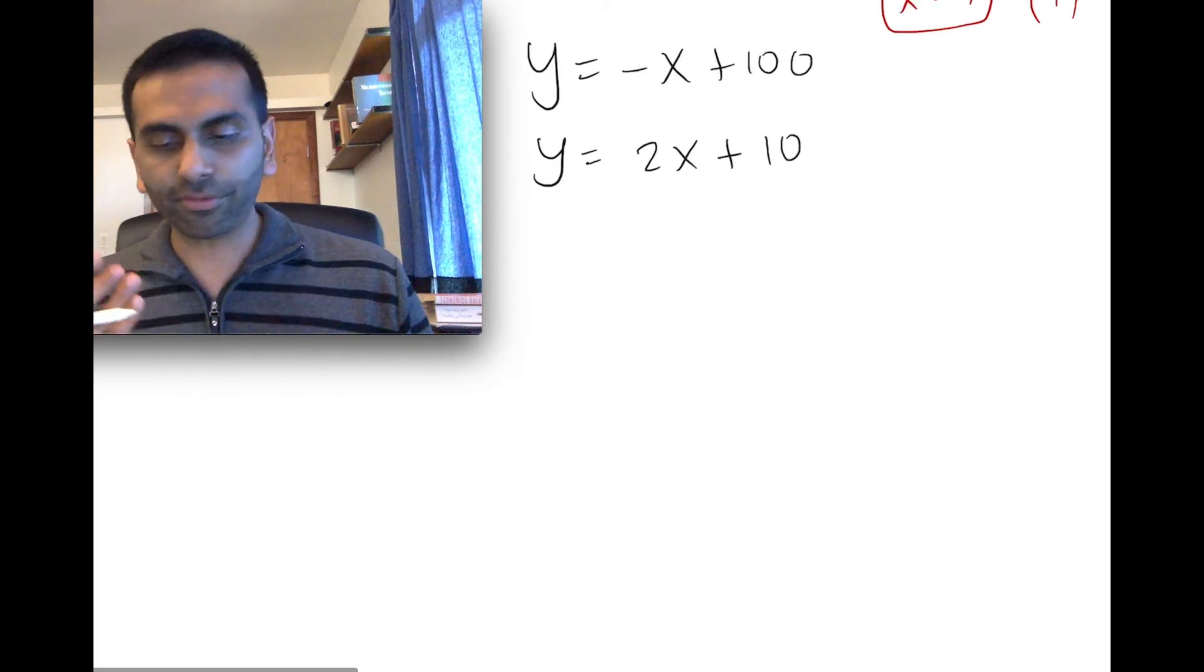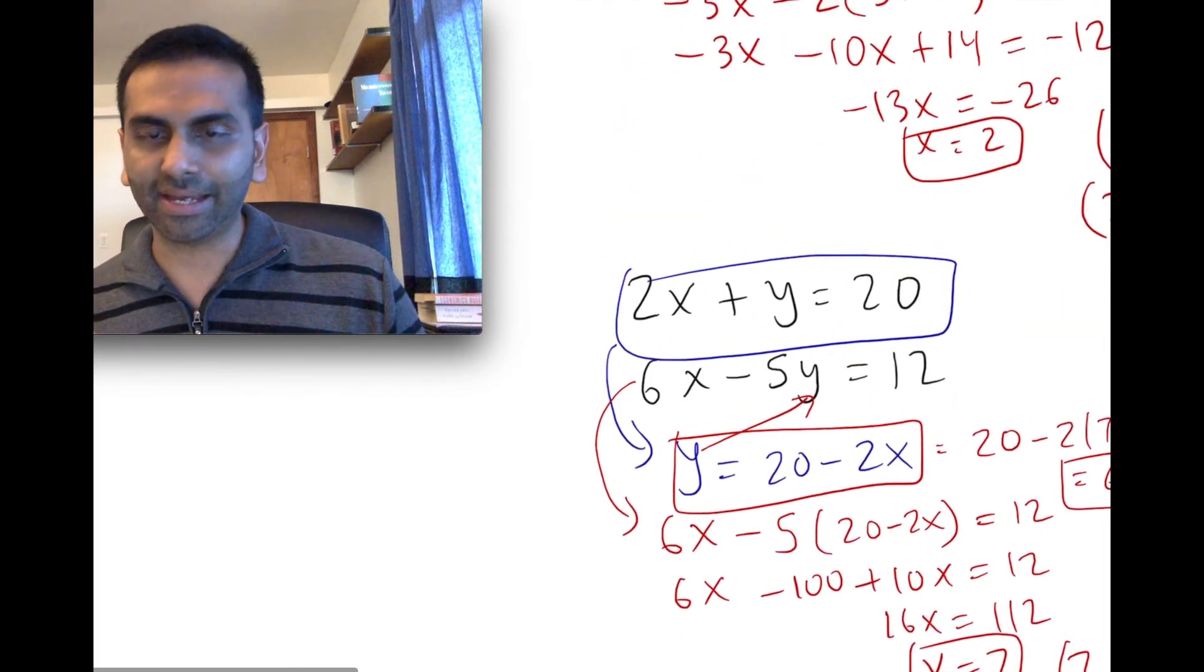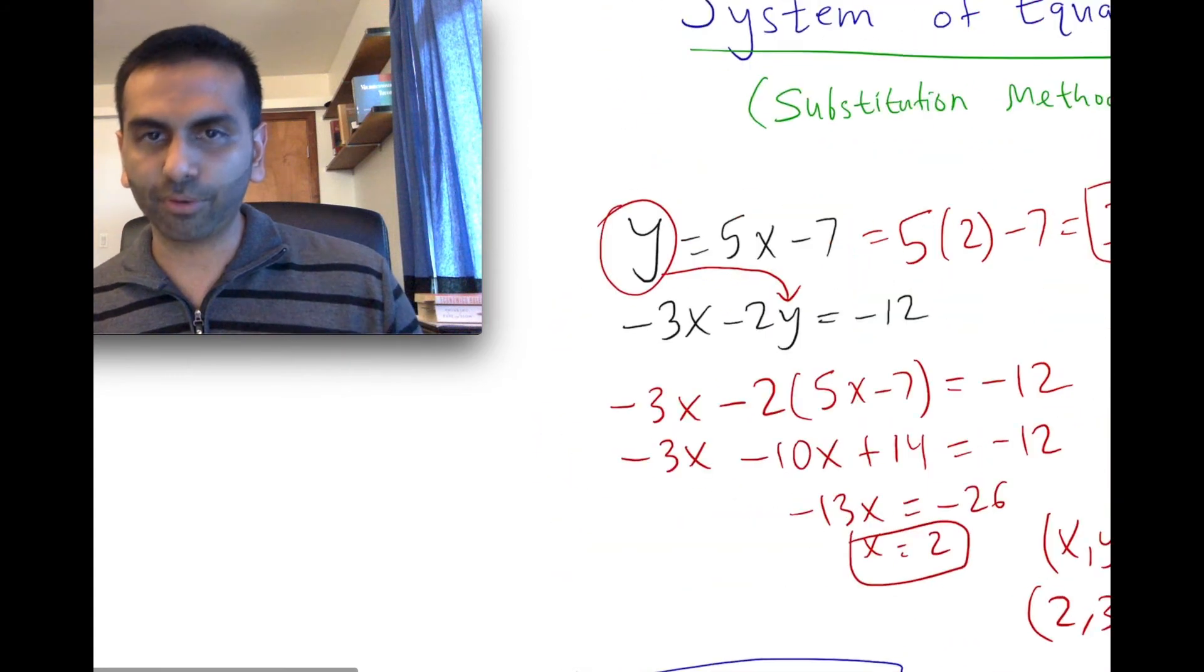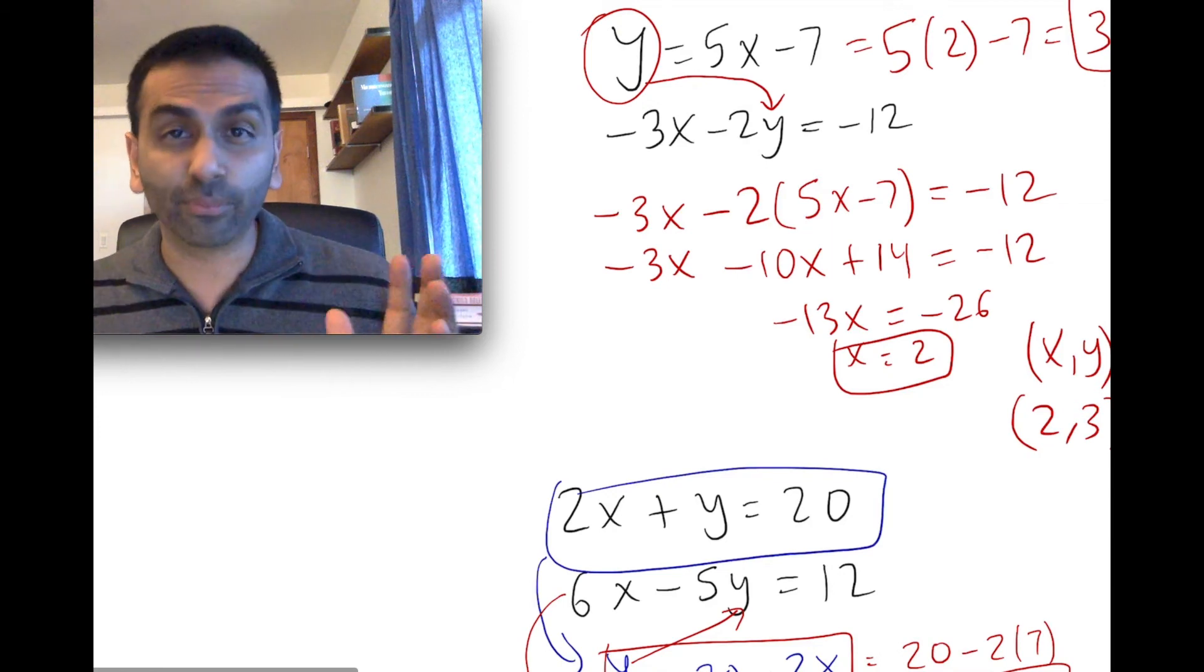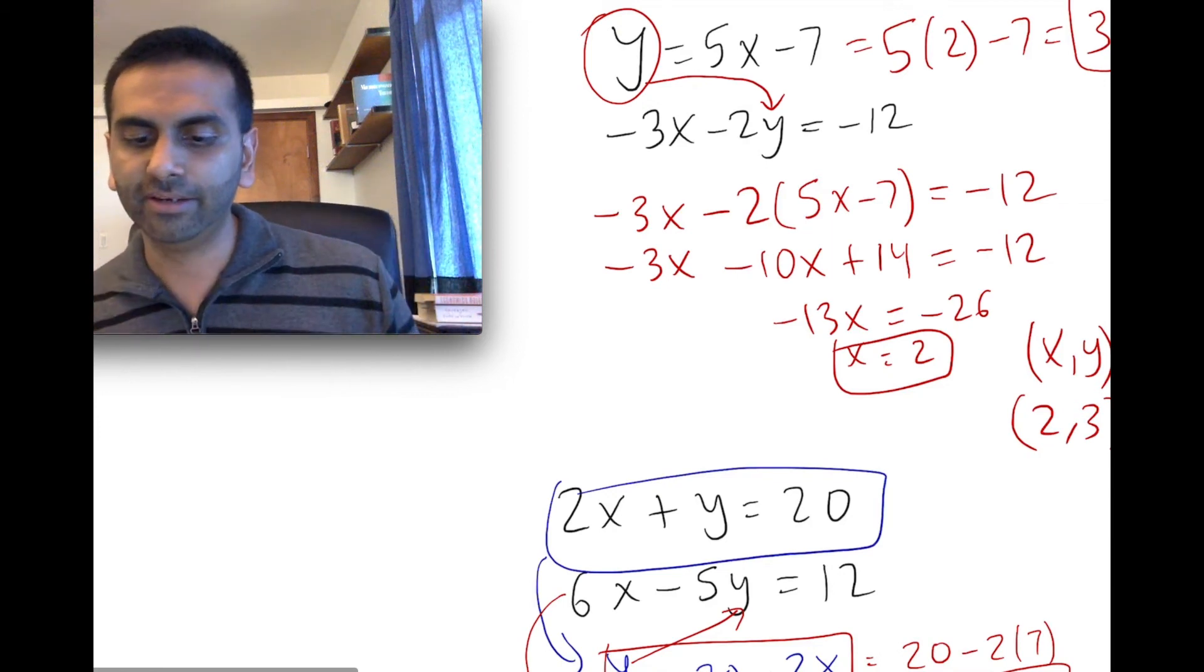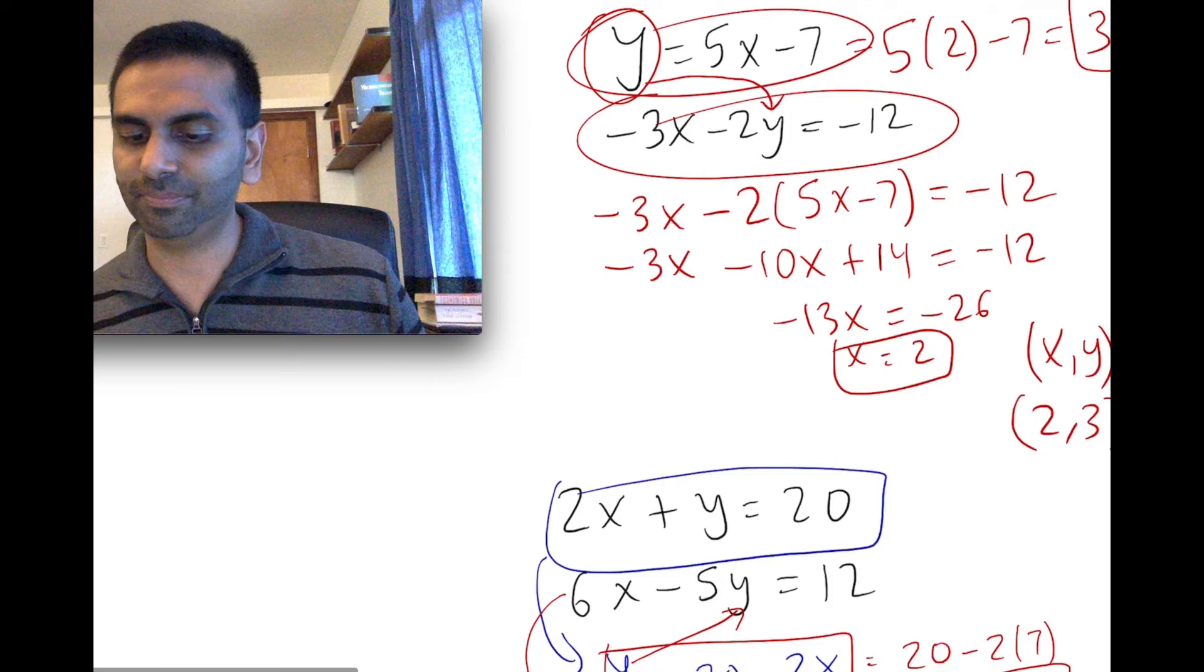So let's think a little bit more about systems of equations and what it means graphically. Now, in both of these problems, it didn't look like it, but basically both equations were lines. There was no square or square root or any other fancy thing here. It's just y equals mx + b.